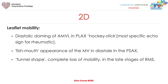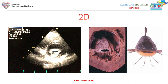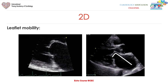Regarding leaflet mobility, you see diastolic doming of the anterior mitral valve leaflet in the parasternal long axis — typically called the hockey stick sign — which is the most specific echo sign for rheumatic affection of the mitral valve. You also see the fish mouth appearance in the parasternal short axis, or a funnel shape with complete loss of mobility in later stages of rheumatic mitral stenosis.